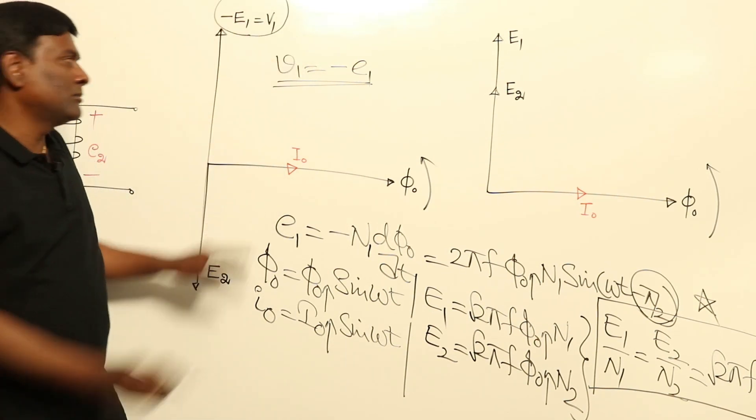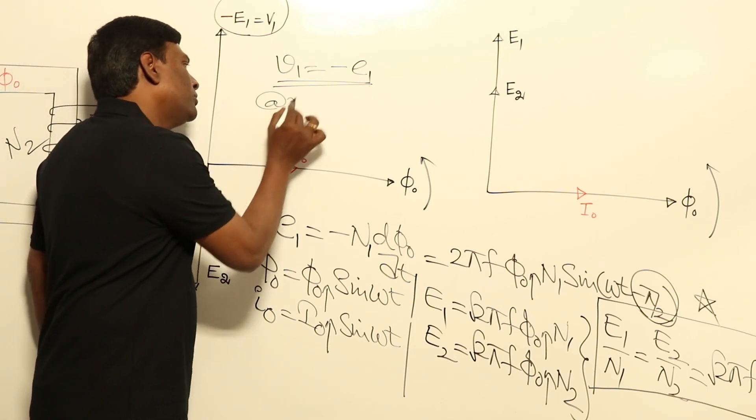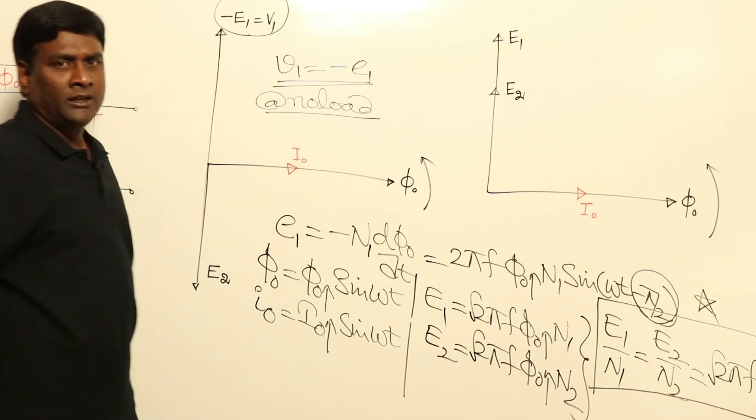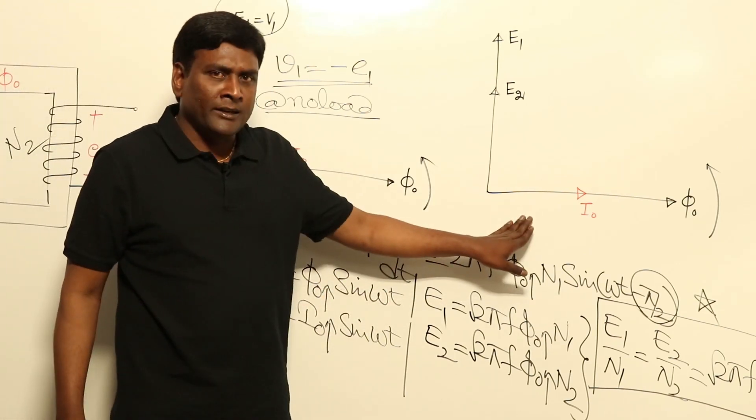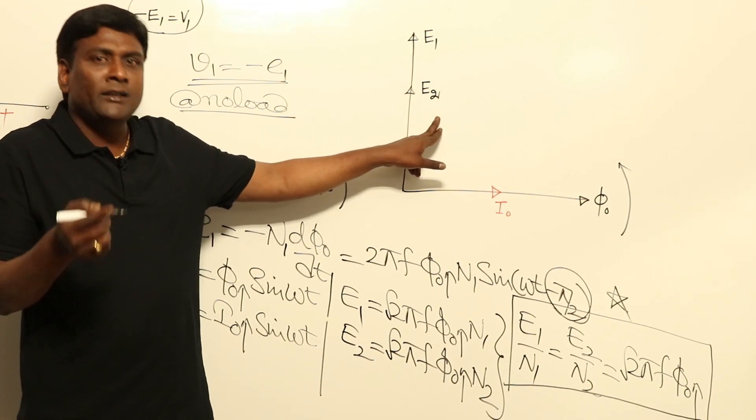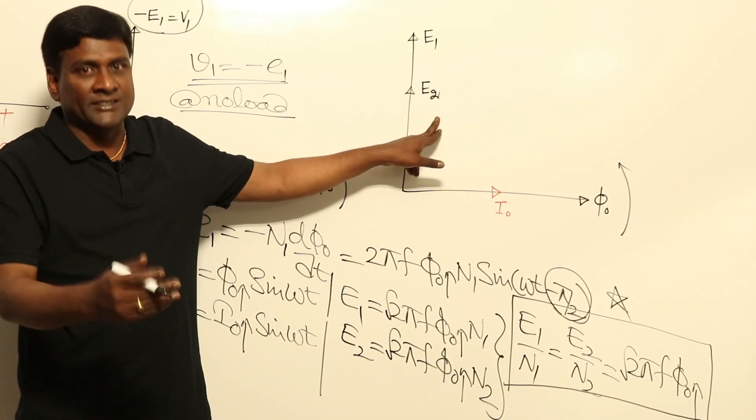So this is going to be the phasor diagram. I can say at no load. Now about this phasor diagram, E1 and E2 are in line. E1 and E2 are in line. I will discuss in loaded condition coming session.